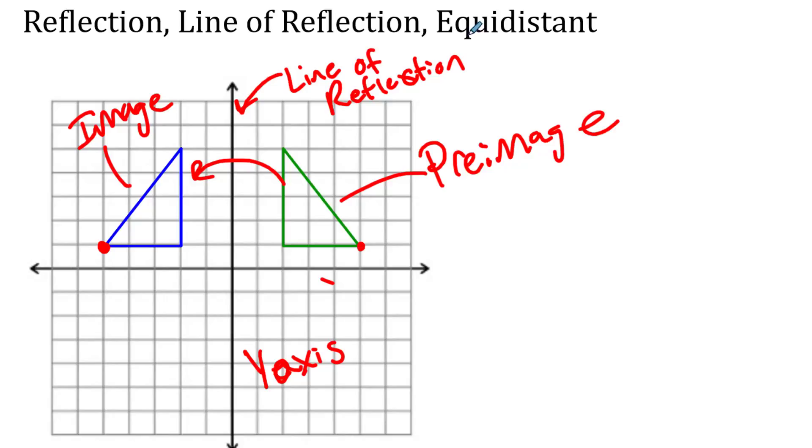Let's check out the vocab term equidistant. So what does that mean? That means that for any pre-image and its image, the points are going to be equidistant to the line of reflection. So if I have a point right here, and notice how it's 1, 2 away from the line of reflection, its reflected image is also 1, 2 away from the line of reflection. That is what's called equidistant.